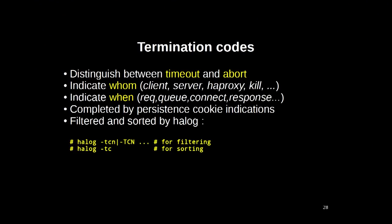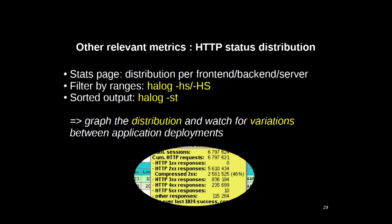Termination codes precisely tell you on what side the problem happened — whether it was the client, the server, or HAProxy itself — and whether a server went down and caused the connection to be killed, and when it happened: during the request, the connection attempt, or the server response. We have in HAProxy an HLog utility, which is provided by default and is able to sort all of this and filter on these codes. So in practice, it's very convenient to quickly check what is happening or to script this.